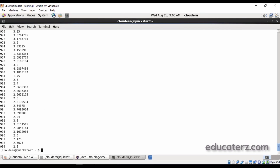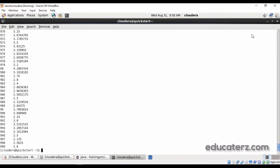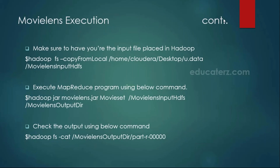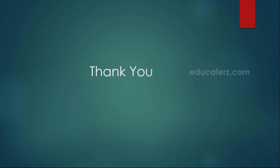Half of the problem gets solved once you identify what is your key and what is your value — here the key is the movie ID and the value is the rating. In this module we have seen how the MovieLens input file looks, what the driver class consists of, how in the mapper we used the split method instead of string tokenizer to read specific fields, and how in the reducer we used summation divided by count to calculate the final average movie rating. In the next module we are going to learn about combiners.